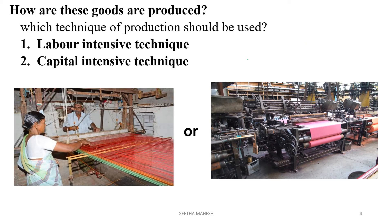The second basic problem of an economy is how are these goods produced — that is, how to produce. It is related to the problem of making a choice in relation to the technique of production. When you have only one type of technology in the production of goods and services, there won't be any problem. When you have more than one method of production, then you have to make a choice.